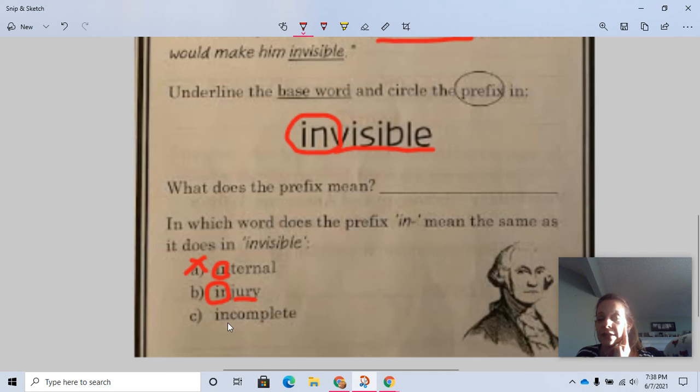Let's look at choice C. We're going to circle 'in' and underline what's left. What word is that? Complete. What does the word complete mean? If you needed to complete this question, I'm asking you to finish it. If you left it incomplete, what would that mean?